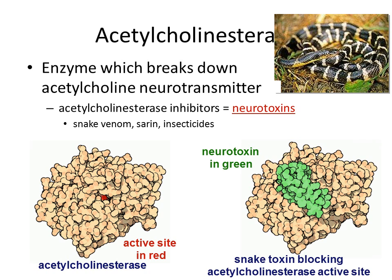An acetylcholinesterase toxin acts as a competitive inhibitor and blocks the active site of the acetylcholinesterase, so it cannot break down acetylcholine. Remember that competitive inhibitors directly block the active site of enzymes, while non-competitive inhibitors bind to another location other than the active site on the enzyme to stop it from functioning.